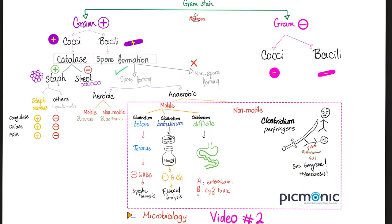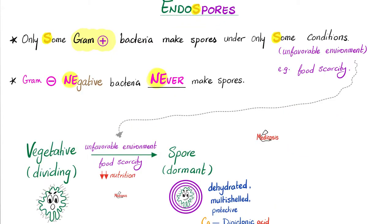How can we treat a condition caused by an anaerobic organism? Give me the opposite — give me aerobic conditions, such as a hyperbaric oxygen chamber, to kick those bacteria out. Do Clostridium perfringens bacteria make spores? Yes, they do, but rarely.